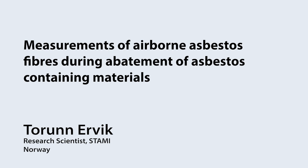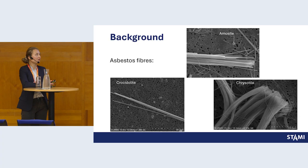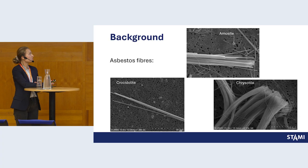I will talk about asbestos, so we are going back to the basics. On the pictures here, you see the three most commonly used asbestos types: amosite, crocidolite, and chrysotile.